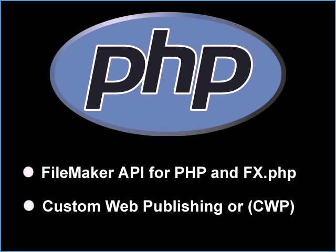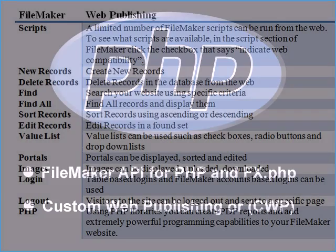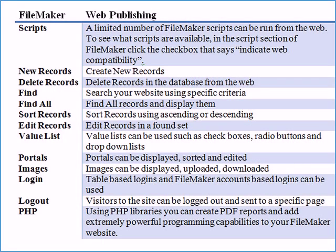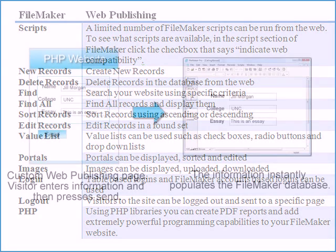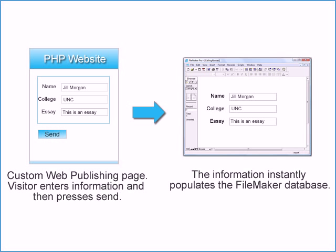CWP is extremely powerful and enables you to build an online version of your database. There are a lot of resources and tools available to facilitate learning and creating FileMaker-driven websites, and they will be covered later in this video. Custom web publishing means that the web files are communicating and working with live data. Since the FileMaker file is hosted, information sent from the web pages automatically updates the database and vice versa.